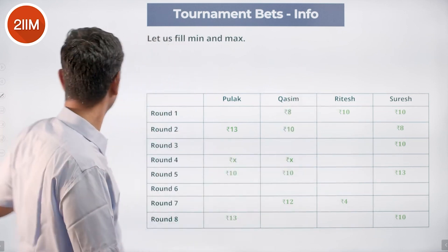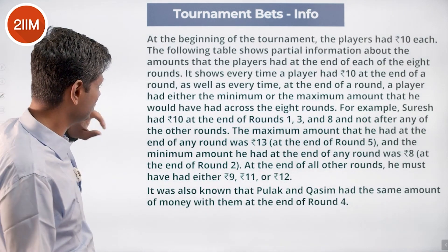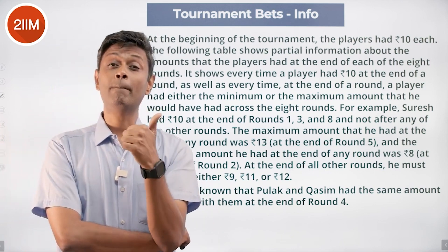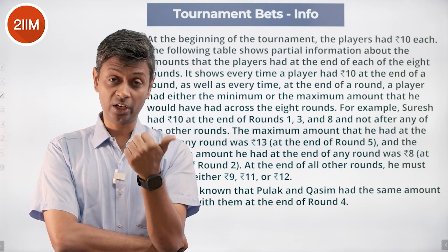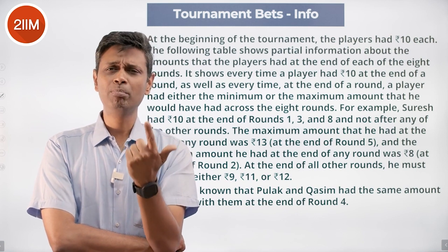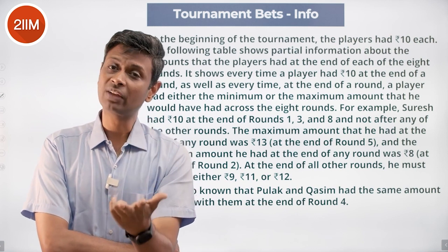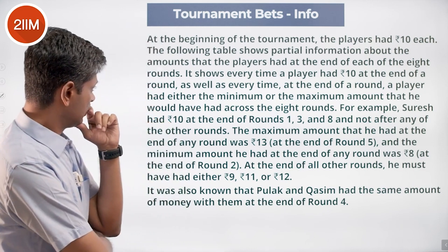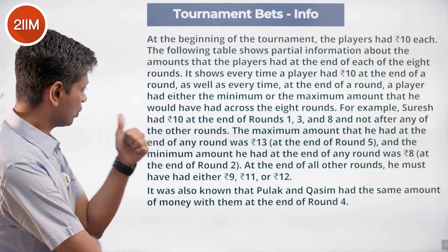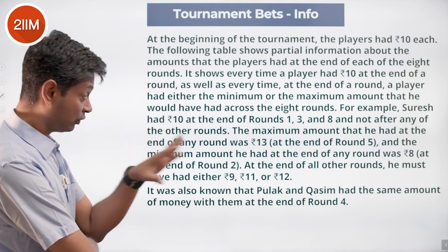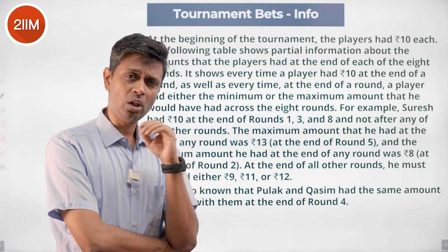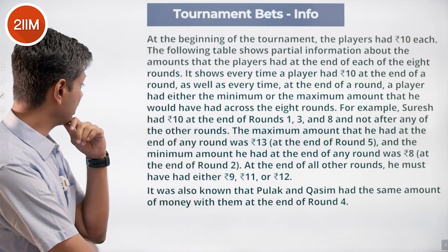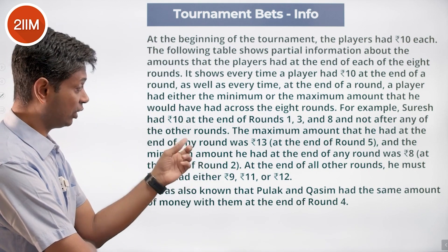Some numbers have been filled. In each round, if the value was 10 we have the information. If it is the maximum that player achieved across eight rounds, we have it. If it is the minimum, we have that too. For example, Suresh had rupees 10 at the end of rounds one, three and eight and not after any of the other rounds. The maximum he had at the end of any round was 13, at the end of round five.